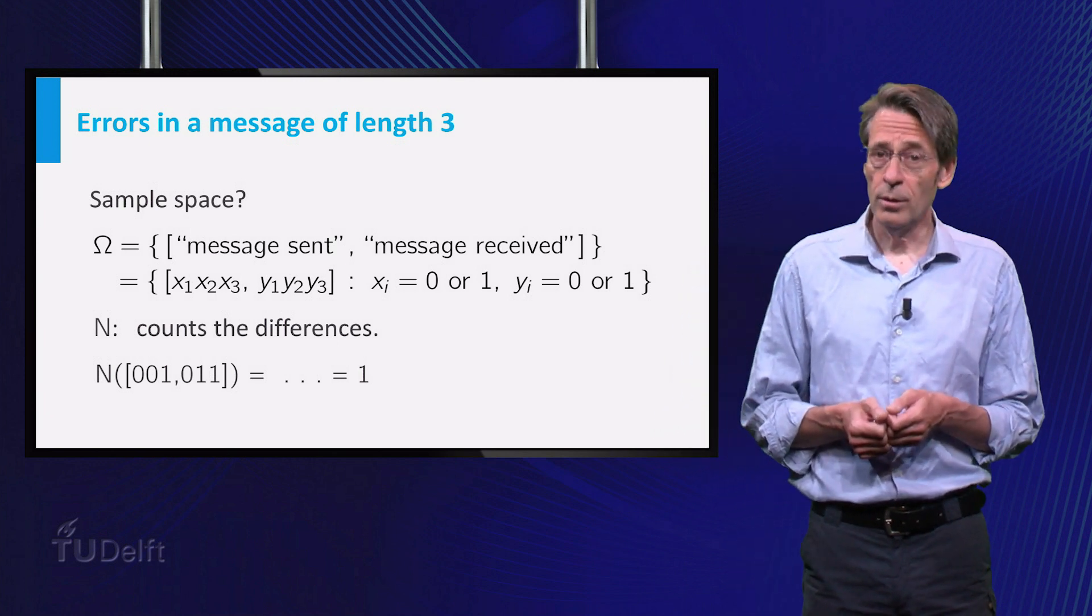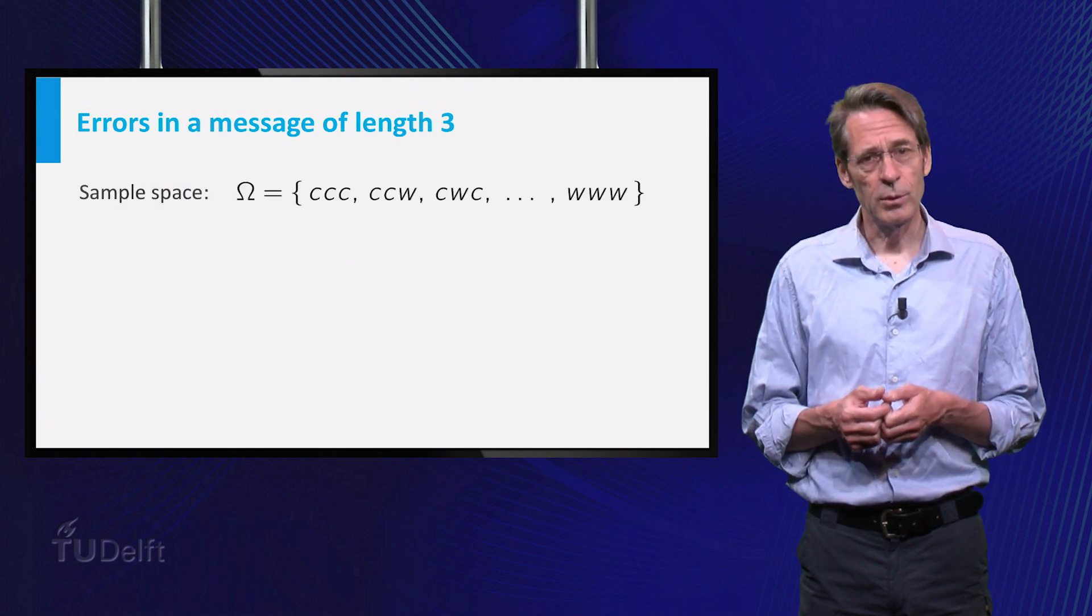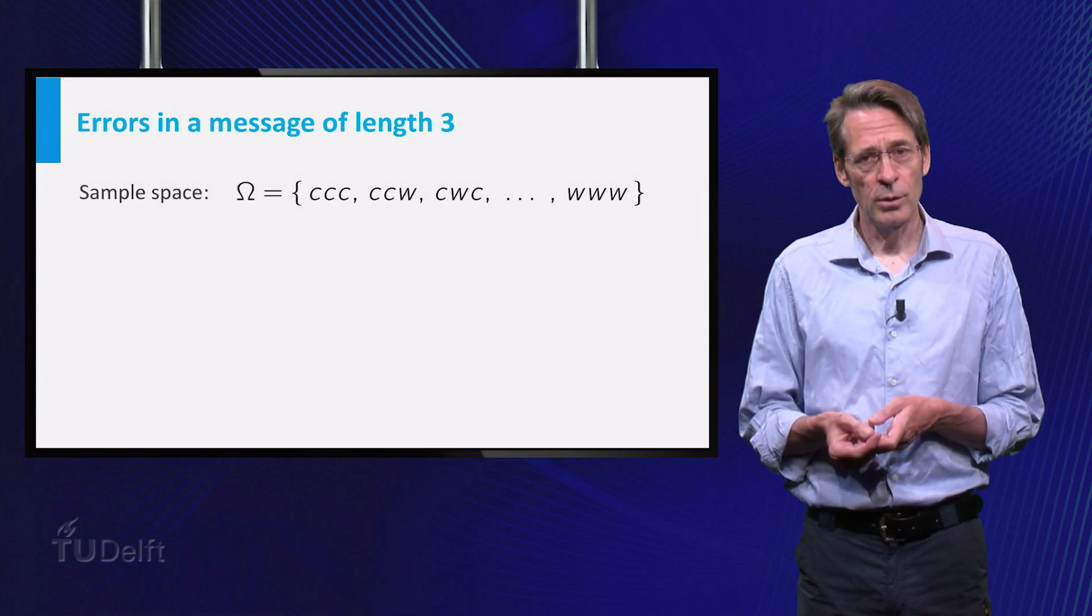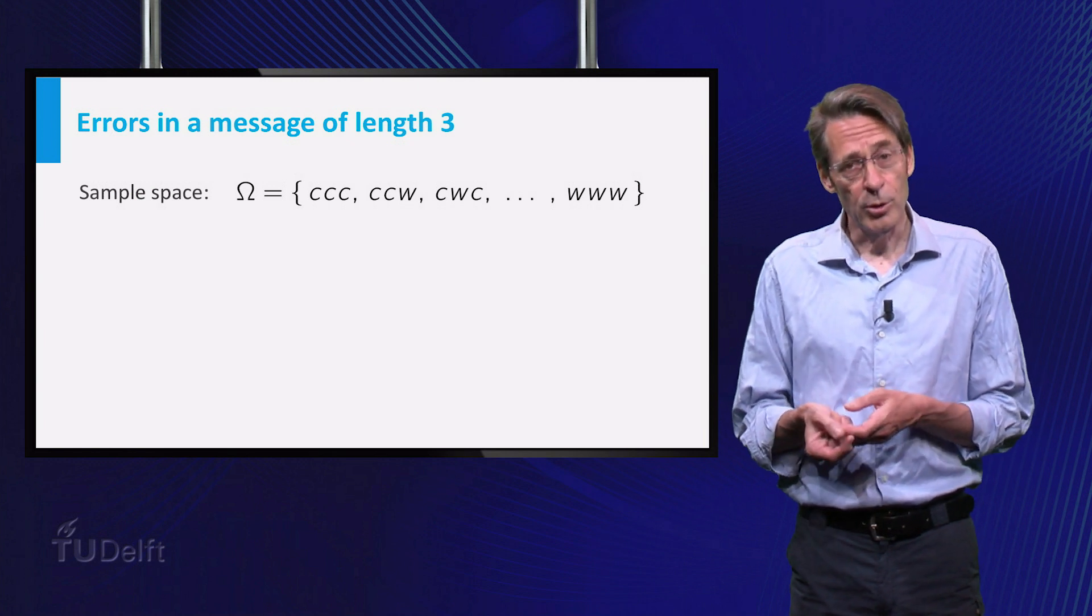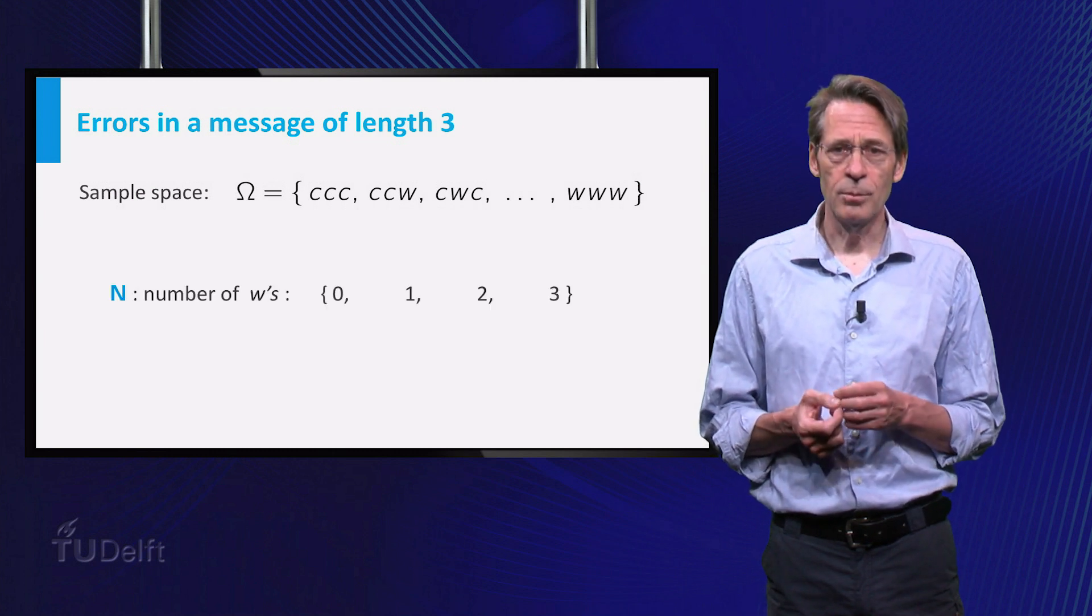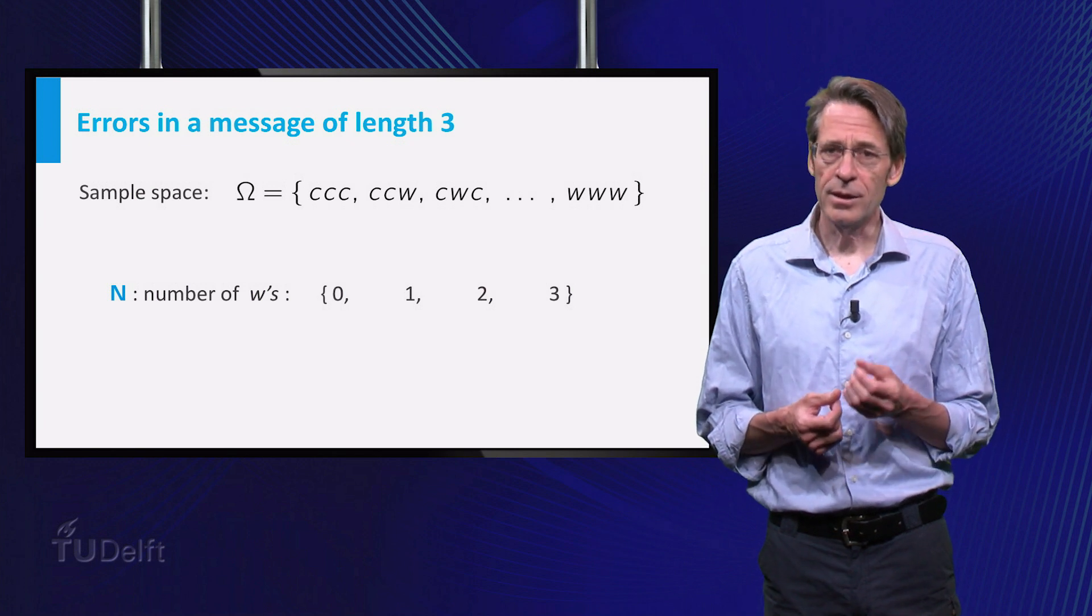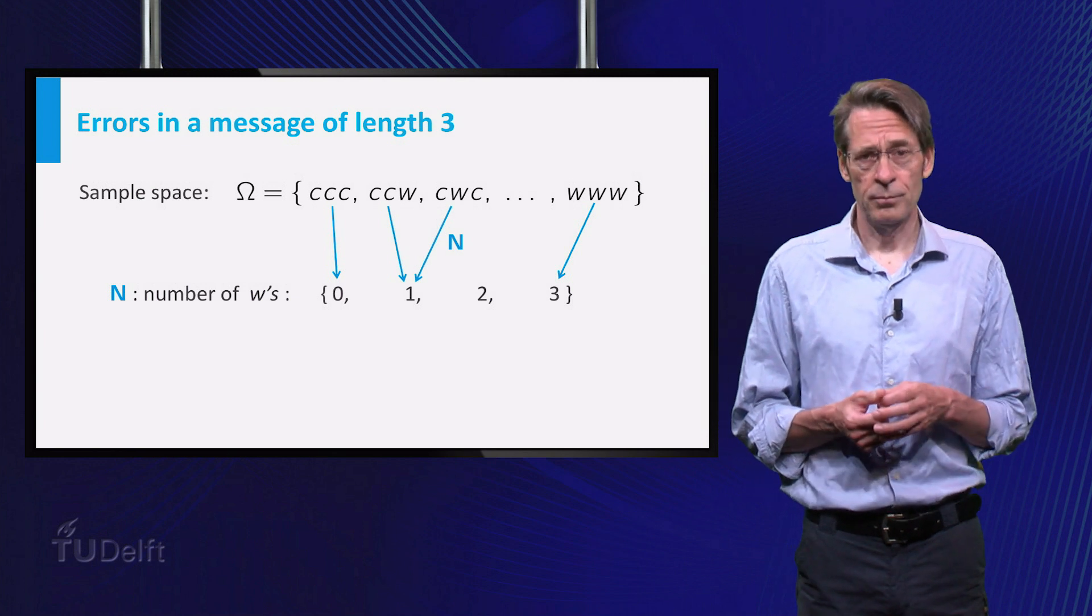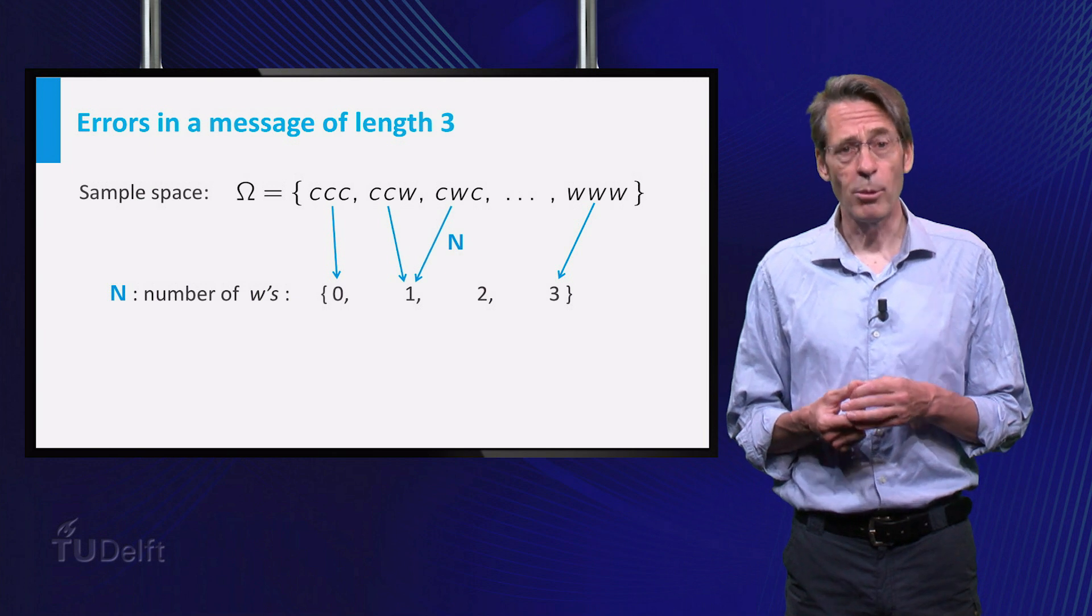To arrive at a smaller, more convenient sample space, I let the sample space consist of all sequences of length 3 containing the letters c and w, where the letter c stands for a bit that is transferred correctly, and the letter w for a wrong bit. Now for each outcome N is just the number of w's it contains. Again N is a function from the sample space omega to the set of real numbers. Of course, for this sample space, the outcomes do not all have the same probability.